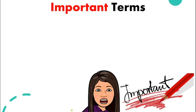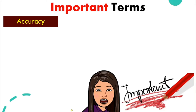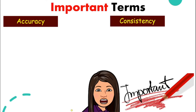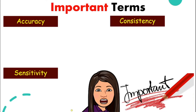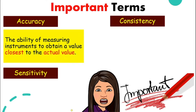Before we look at the instruments, there are three very important terms. The first one is accuracy. Accuracy is the ability of the measuring instrument to give you a value that is very close to the actual value. Let's say a pencil is 10 cm long. When you measure with an instrument that has high accuracy, it will give you a reading close to the actual value, that is 10 cm.